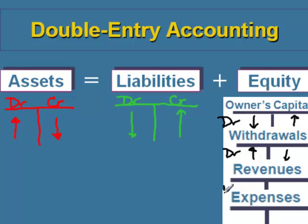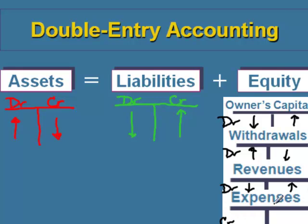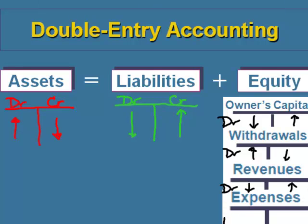For revenues, debits are on the left and credits are on the right. But for revenues, debits make a revenue account go down and a credit makes a revenue account go up. For expenses, debits are always on the left and credits are always on the right. For expenses, debits make an expense account go up and a credit makes the expense account go down.